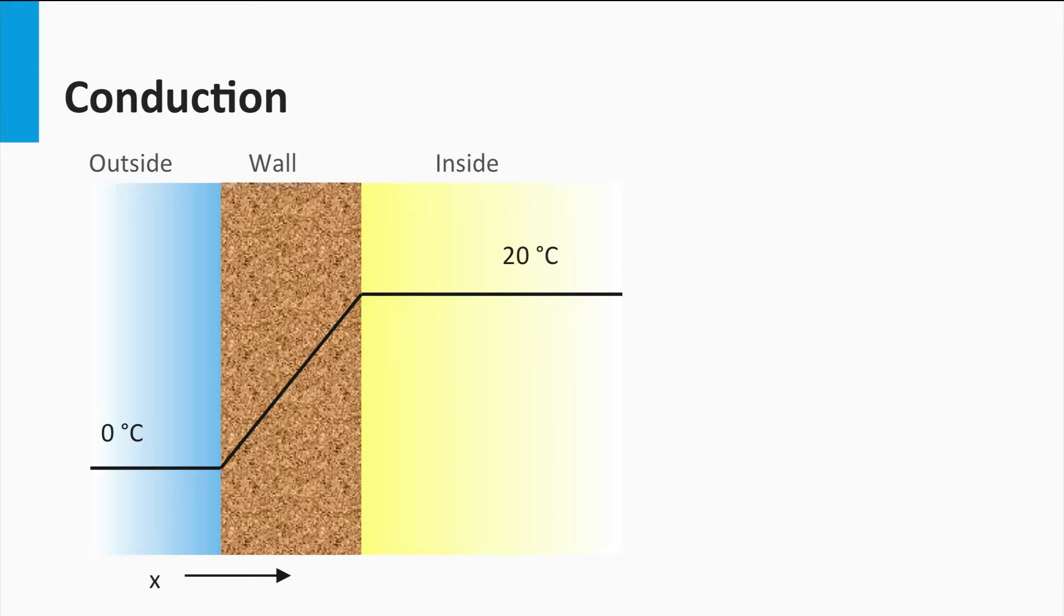Conduction is the transfer of heat in a medium due to a temperature gradient. Let's imagine a house with a heating system during winter. The inside of the house is warm, but the outside is cold. Then a gradient between the inside and the outside is established and therefore there will be conduction of heat through the house walls.